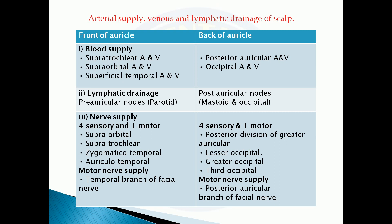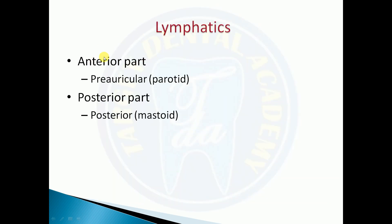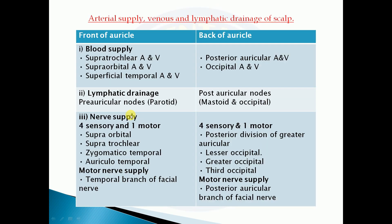The lymphatic drainage: in front of the auricle, it is drained by the pre-auricular nodes. Behind the auricle, it is drained by the post-auricular nodes, which include the mastoid and occipital nodes.